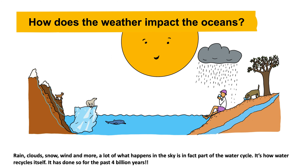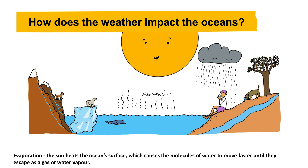Rain, clouds, snow, wind and more — a lot of what happens in the sky is in fact part of the water cycle. It's how water recycles itself, and it has done so for the past four billion years. The sun heats the ocean's surface, which causes the molecules of water to move faster until they escape as a gas, or water vapor.